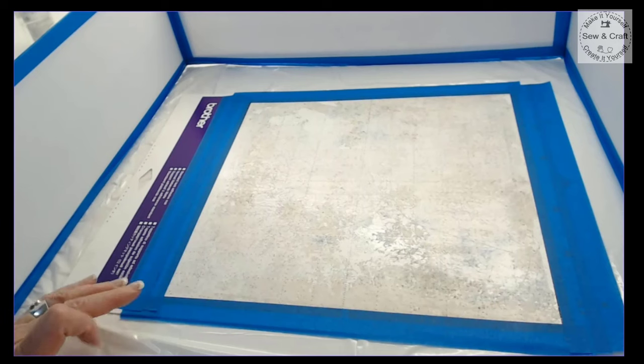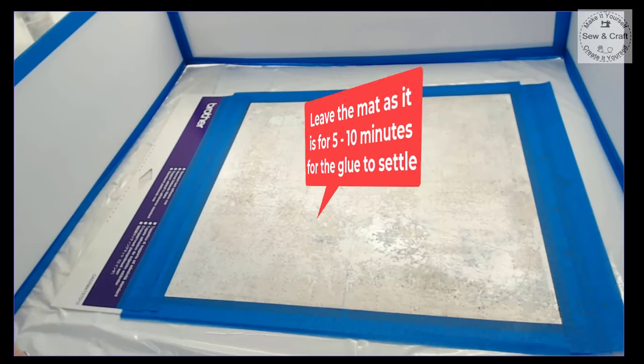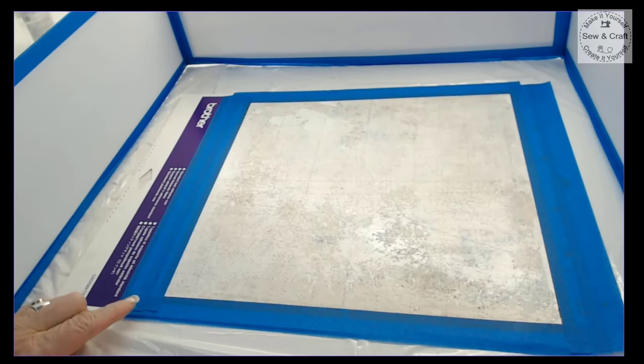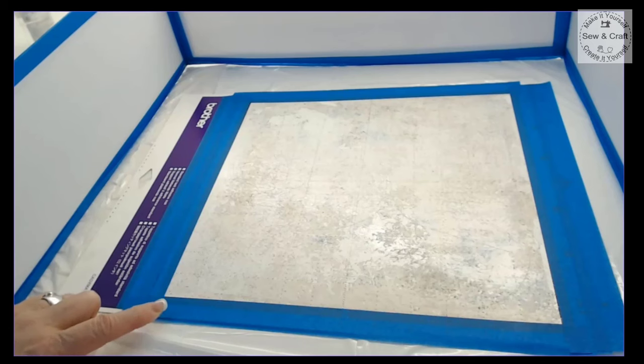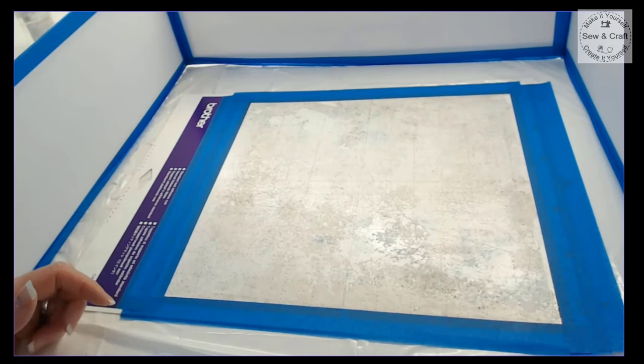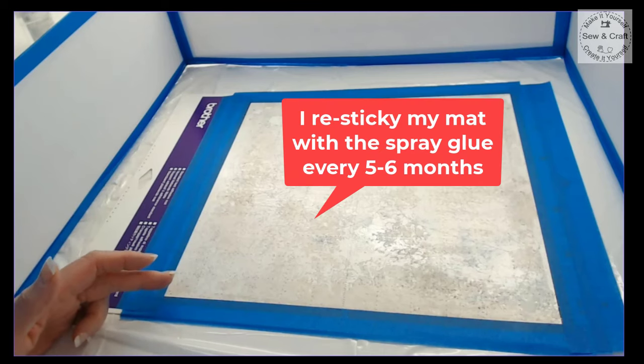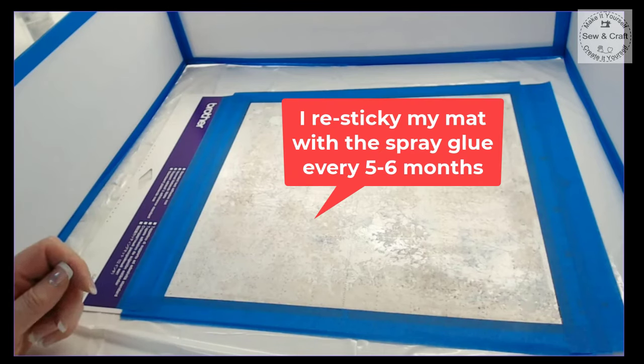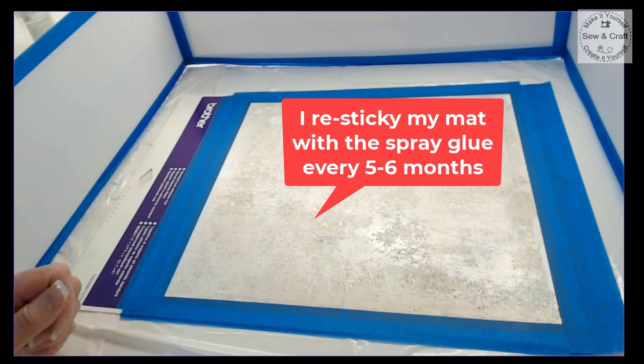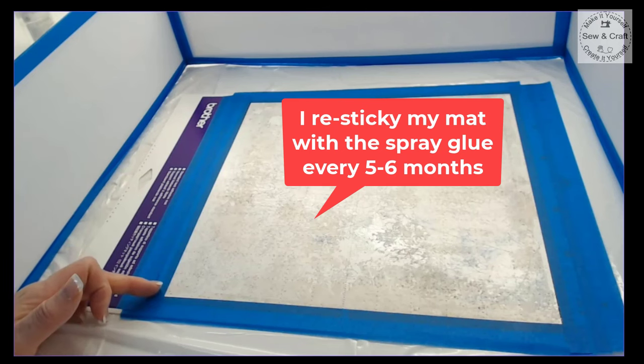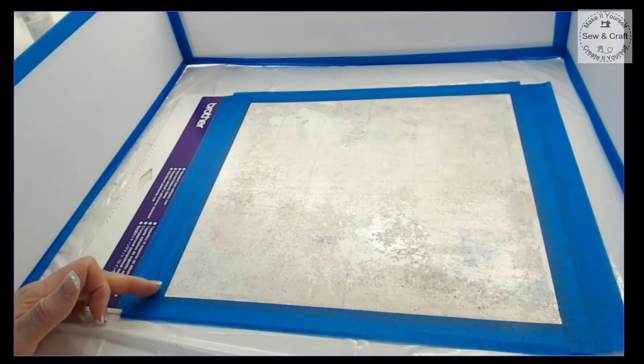Once you've sprayed your mat with the glue, just leave it for about 5 to 10 minutes so that the glue can settle on the surface and then your mat will be ready to use again. This is a process that you might have to do every few months. I do my mats on average every five to six months, I'll give them a new coating of glue.